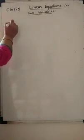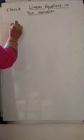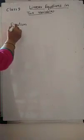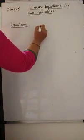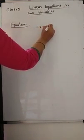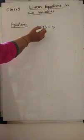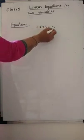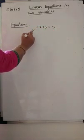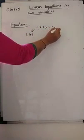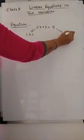Let us see first what is an equation. Equating 2 mathematical expressions is called an equation. Let us take an example: 2x plus 3 is equal to 5. This is an example of an equation. Here we are equating 2 expressions — 2x plus 3, and 5. This side is called the Left Hand Side of the equation and this is called the Right Hand Side of the equation.